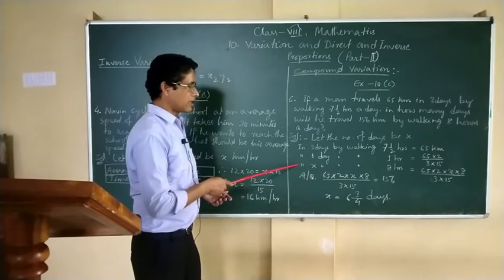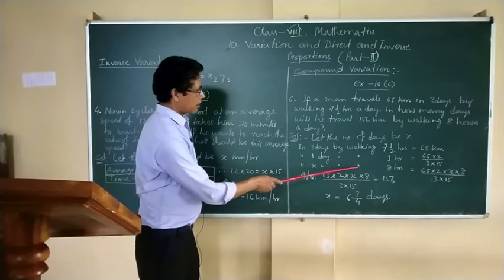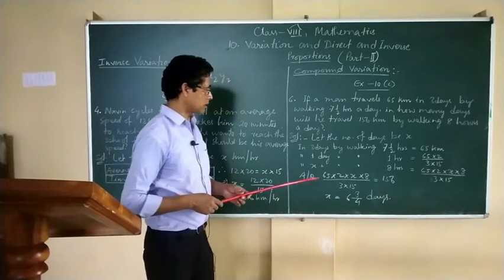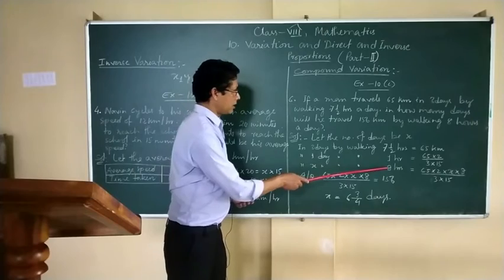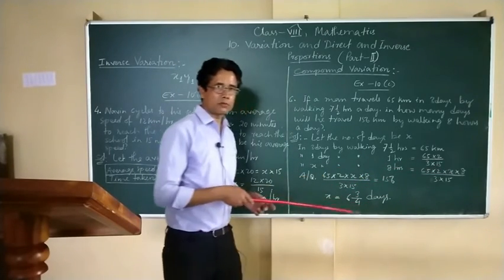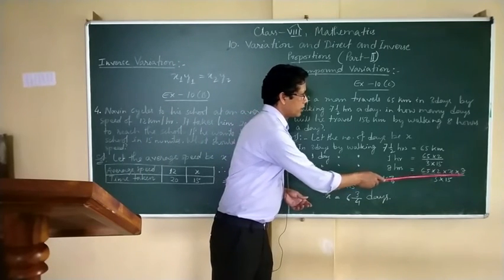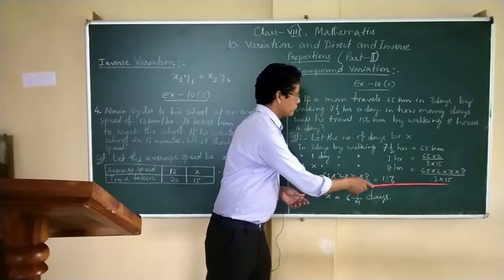Now the third step. In x days, by walking 8 hours, that means this x and 8 both will be multiplied to the numerator. We get this relationship: 65 into 2 into x into 8 by 3 into 15.